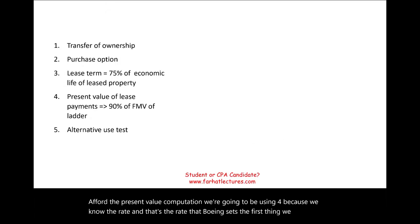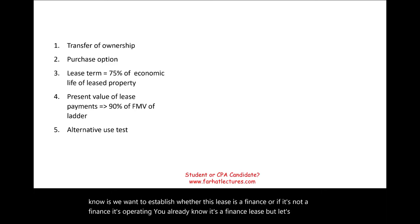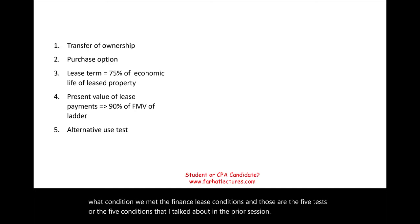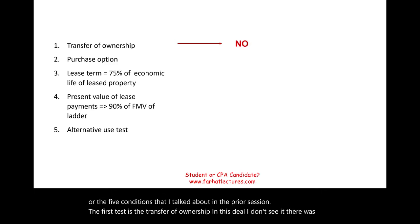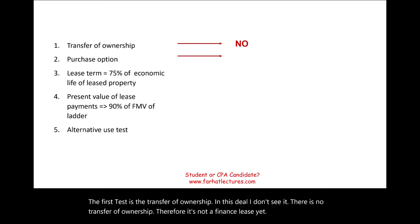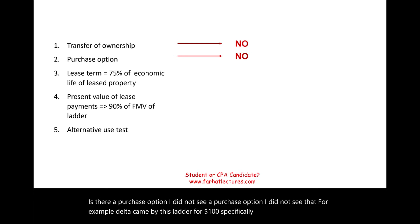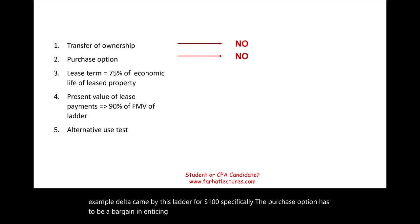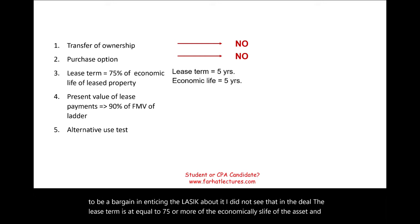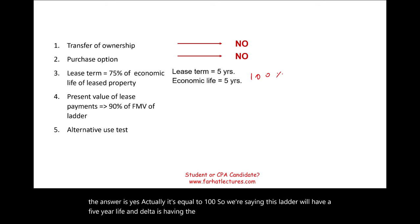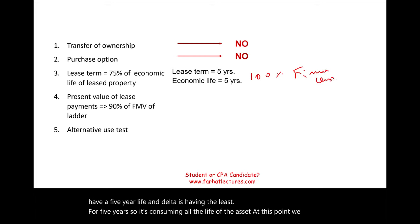The first thing we want to do is establish whether this lease is a finance lease or an operating lease. The first test: is there a transfer of ownership? No — there is no transfer of ownership. Is there a purchase option? No bargain purchase option is mentioned. Is the lease term equal to 75 percent or more of the economic life? Yes — it's actually 100 percent. The ladder has a five-year life and Delta's lease is for five years, consuming all the life of the asset. At this point we have a finance lease.